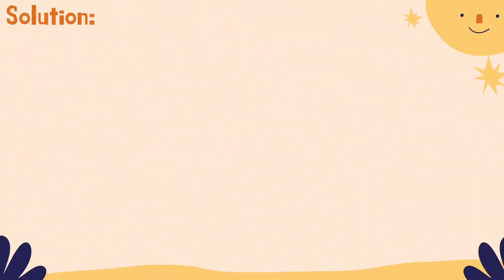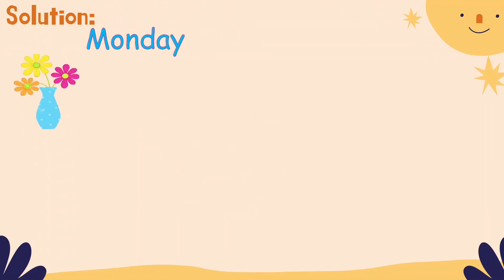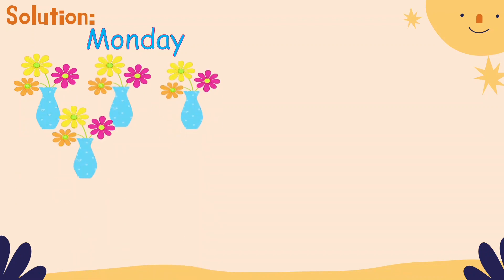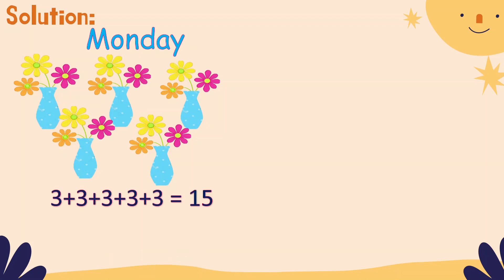Here is the solution. On Monday, she used five vases and put three flowers in each. The addition sentence is three plus three plus three plus three plus three equals 15. And our multiplication sentence is five times three equals 15.